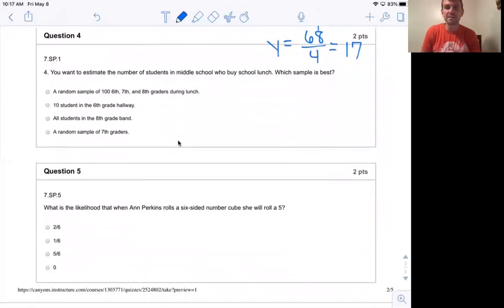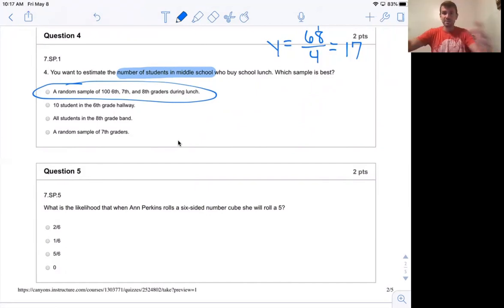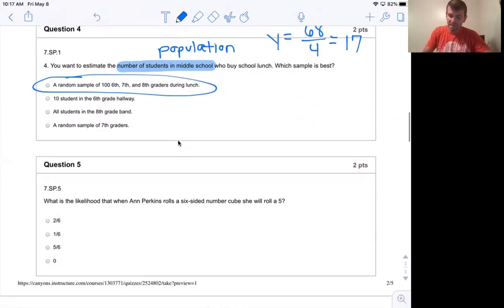Number four, you want to estimate the number of students in middle school who buy school lunch, which sample is best. So the key in this problem is that we are trying to estimate the number of students in where? In the entire middle school. So the answer that's going to be correct here is if I want to know about the entire middle school, I want to pick people randomly from each age group, because I don't know if the sixth graders might be buying more school lunch or the eighth graders might be buying more. I want to get a sample that represents everyone in my, this is what we call our population. So I want my sample to reflect that population, which means I don't want to exclude the sixth graders, seventh graders, or eighth graders. I want to be including as many of that target population as I can.